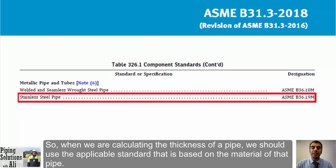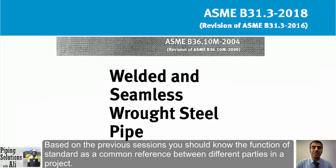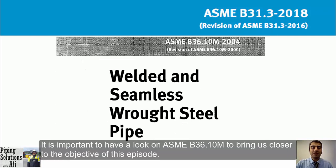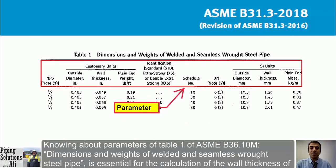When calculating the thickness of pipe, we should use the applicable standard based on the pipe material. It's important to review ASME B36.10 to understand the parameters of Table 1 — Dimensions and Weights of Welded and Seamless Wrought Steel Pipe — as these are essential for calculating wall thickness.